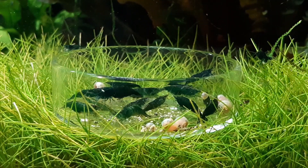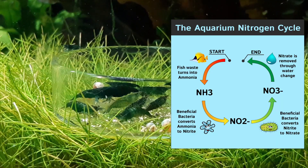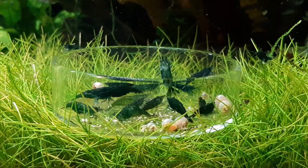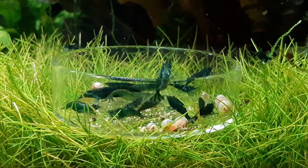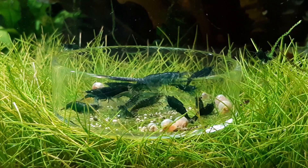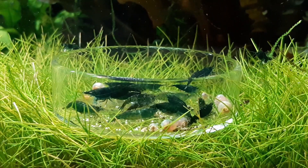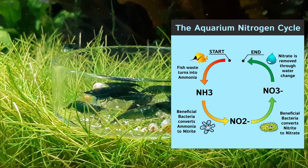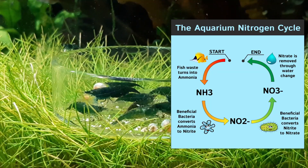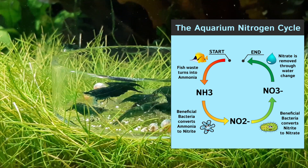To start, I'll explain the nitrogen cycle. You begin with decaying food waste, snail waste, shrimp waste, fish waste — the poo, the pee, all that stuff — and that's going to create ammonia. The beneficial bacteria that we're going to build — that's the point of cycling — is going to convert that ammonia, the NH3, into nitrite, which is NO2.